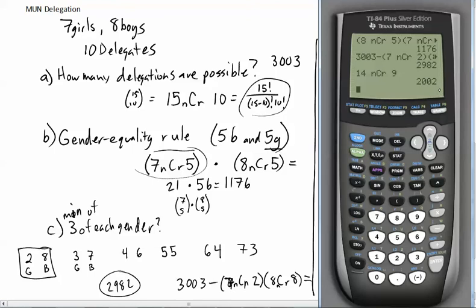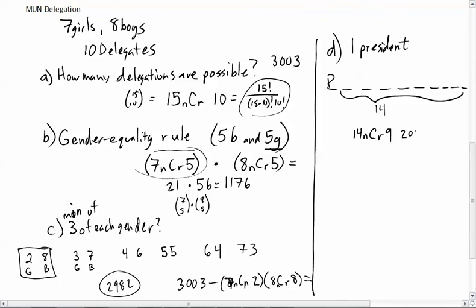So, if there are 2,002 possibilities with the president, that means that 2,002 out of 3,003 include el presidente, which is exactly two-thirds of the delegations will include Mr. President. Now, that should make sense because 10 out of 15 children go. So, if 10 out of 15 children go, two-thirds of the children get to go. And if they get to go, then it's two-third possibility that the president will be included. I hope this is helpful as you start to go through your NCR and NPR as you're trying to figure out which one to use. Good luck on your homework.